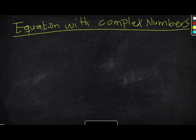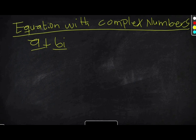In this video, we are going to see how we can solve equations involving complex numbers. Anytime you are given an equation which involves a complex number, let's take the standard form of a complex number, which is A plus Bi. We know that A is our real number and B is our imaginary number. To solve an equation which involves a complex number, you simply equate the real part and then equate the imaginary part.